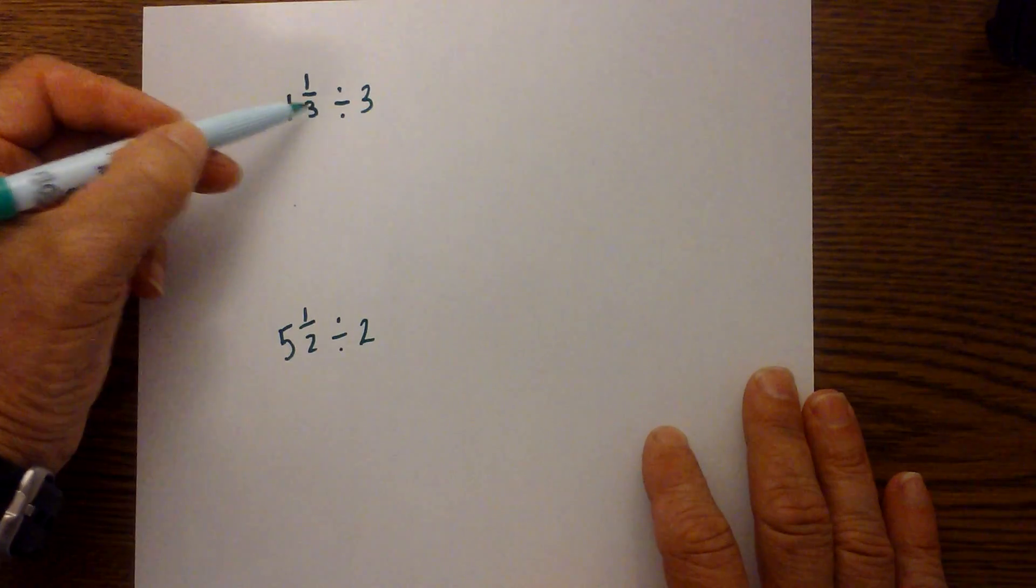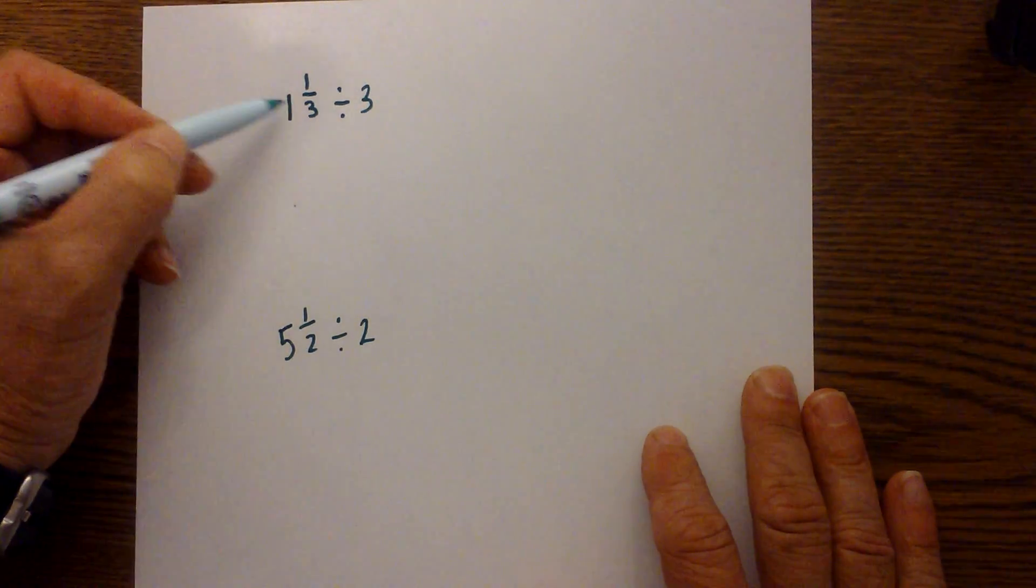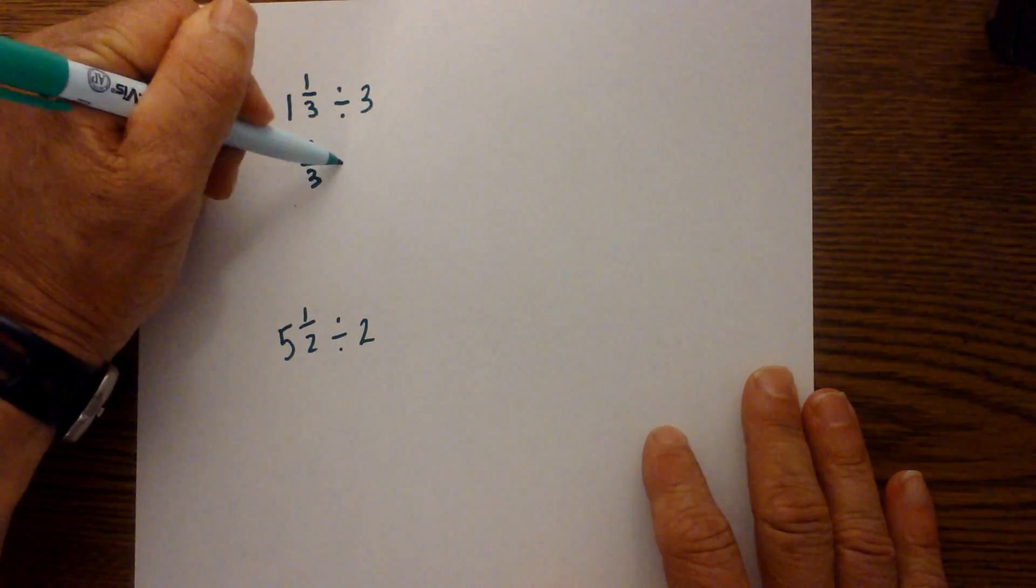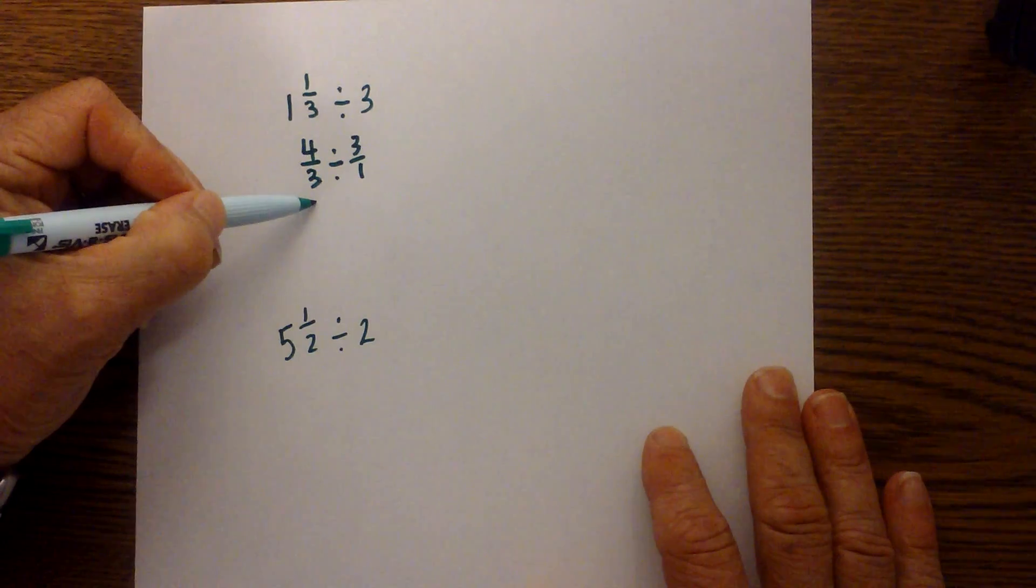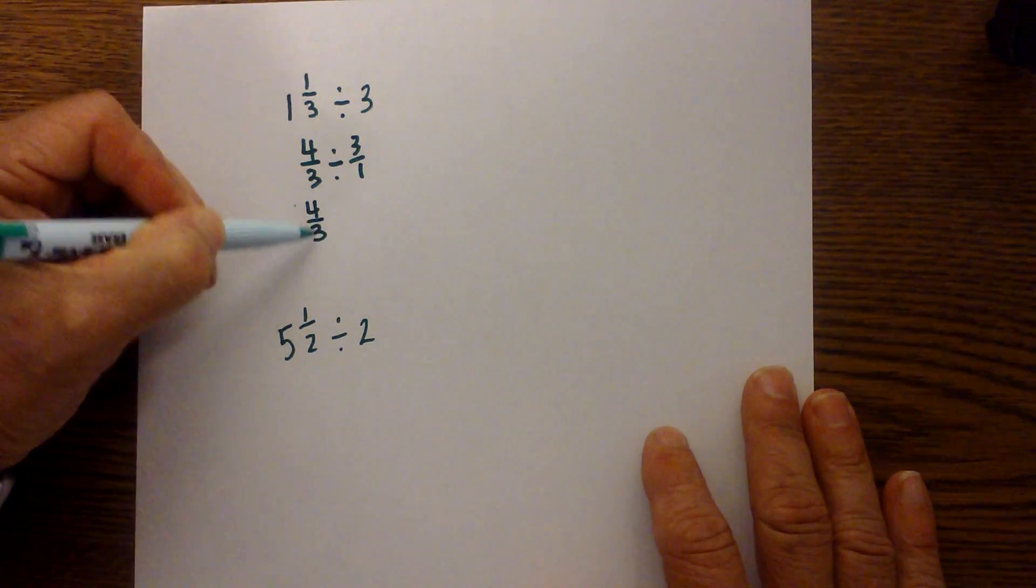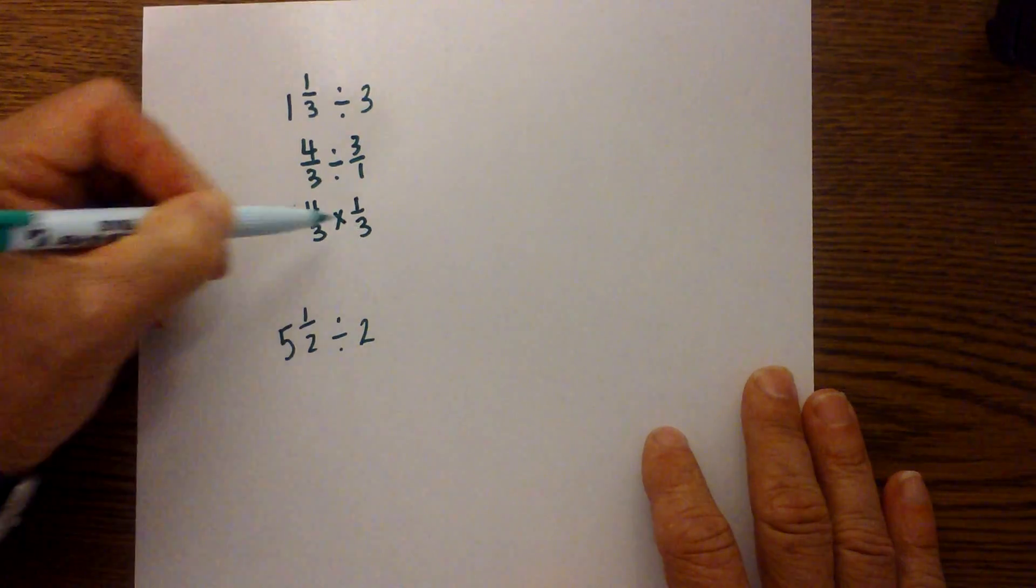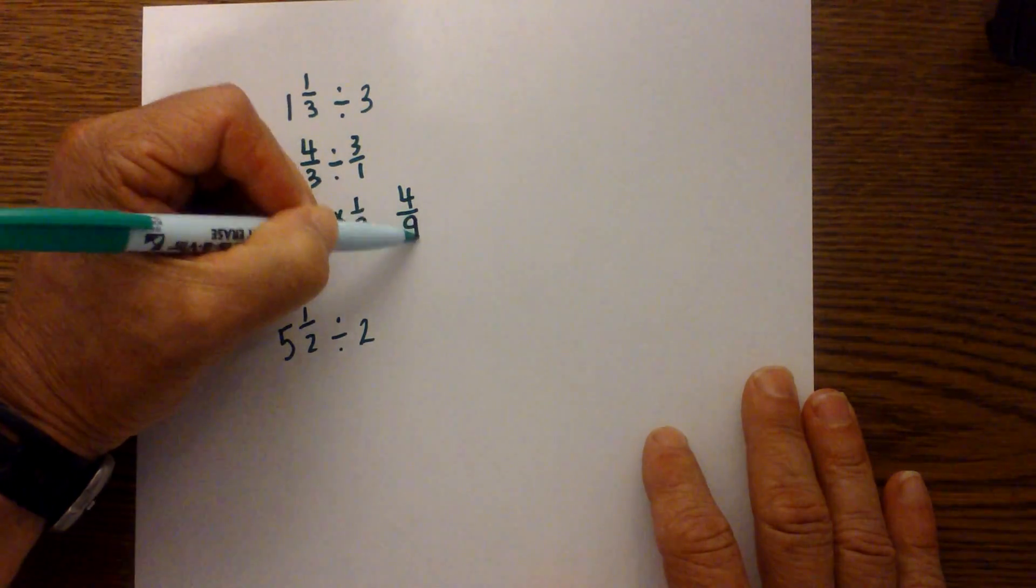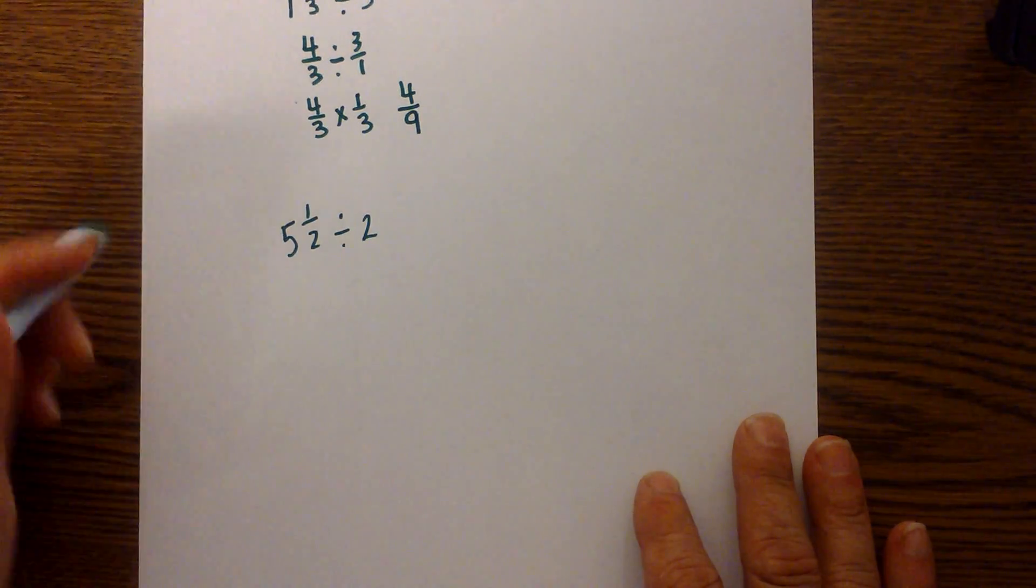We have 1 and 1 third divided by 3. Convert to an improper fraction. 3 times 1 plus 1 is 4 thirds divided by 3 over 1. By now you should be getting the hang of this. Keep the first fraction, change and create the reciprocal. 4 times 1 is 4, 3 times 3 is 9. So, it is 4 ninths. And let's go ahead and complete the last one.